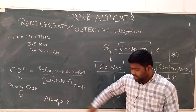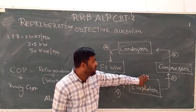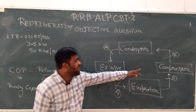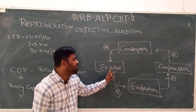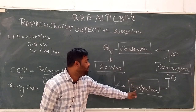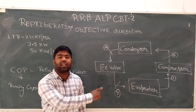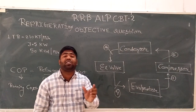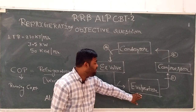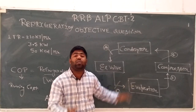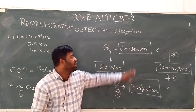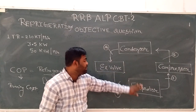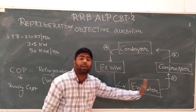Now we will see the vapor compression refrigeration system: compressor, condenser, expansion valve, evaporator. What does the compressor do? In the evaporator, the vapor refrigerant is compressed. The evaporator and condenser both work on phase change. Condenser: vapor to liquid. Evaporator: liquid to vapor.